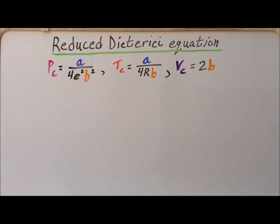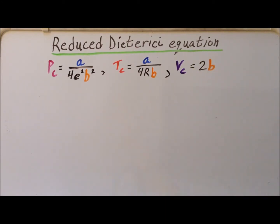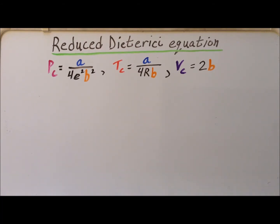I draw your attention to the fact that this value in particular is slightly different than the value we recall for the Van der Waals equation, where the critical volume was 3 times B.